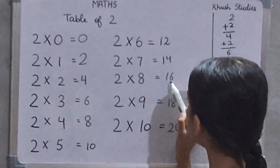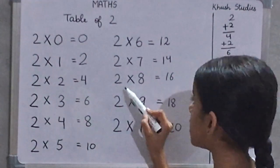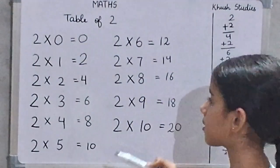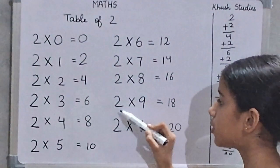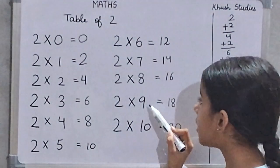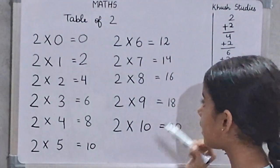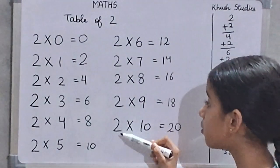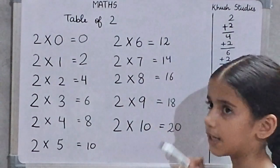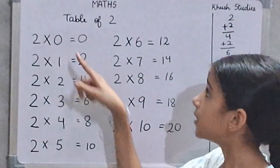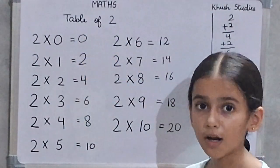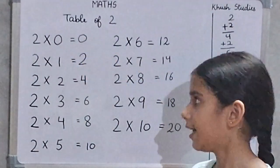2 times 8 are 16. 2 times 9 are 18. And 2 times 10 are 20. Now we will learn the table of 2 again.